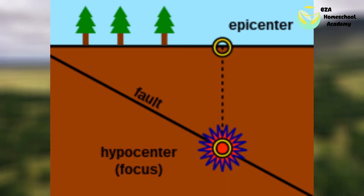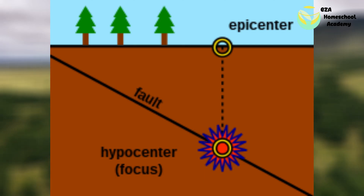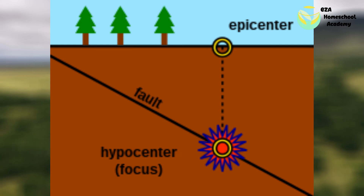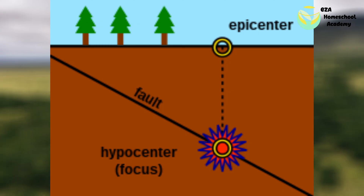The area below the surface where the earthquake starts is called the hypocenter. The area on the surface right above the hypocenter where the earthquake started is called the epicenter. Scientists use this information to track, record, and find out more about earthquakes.